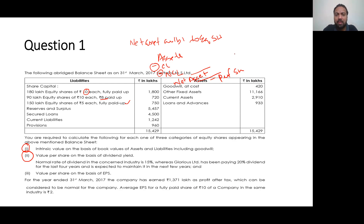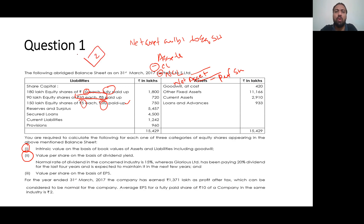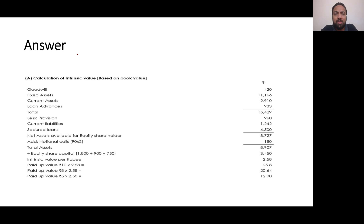We have looked at Rs 10 fully paid and Rs 5 fully paid shares. For 90 lakh equity shares partly paid — if there is a question about this, the paid-up amount is Rs 8. The book value basic intrinsic value calculation follows.